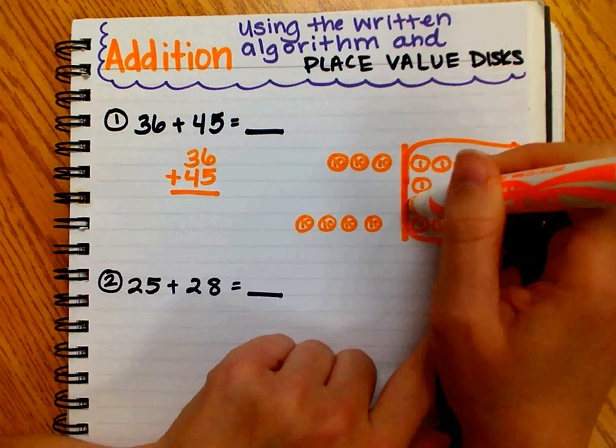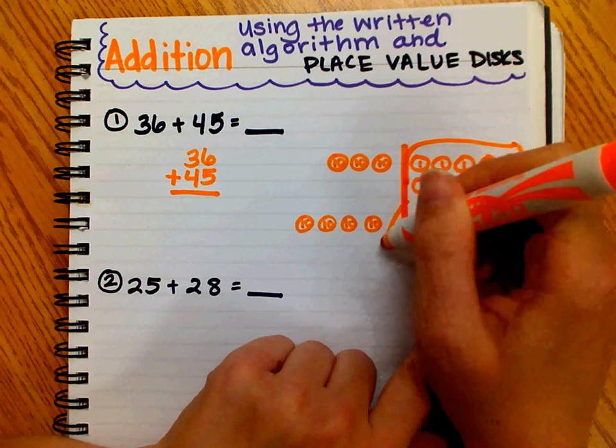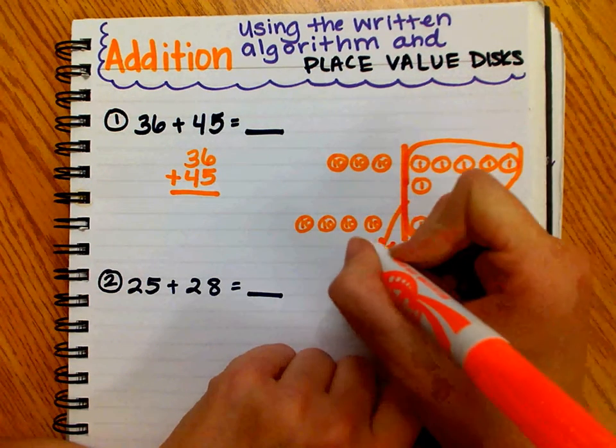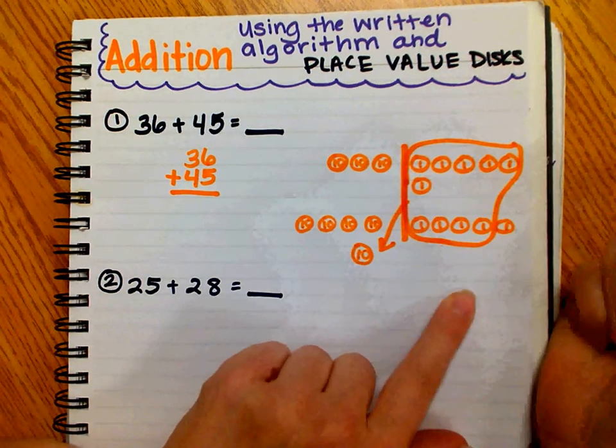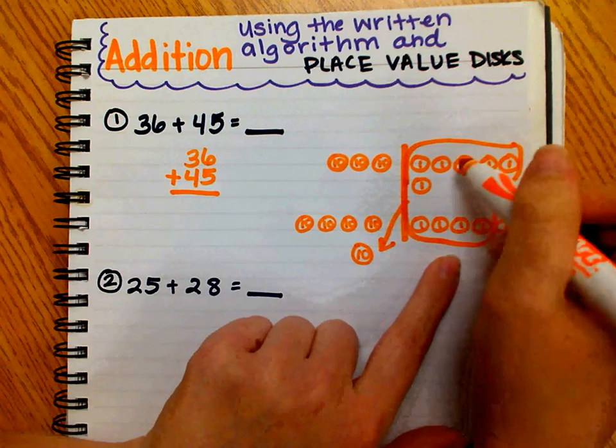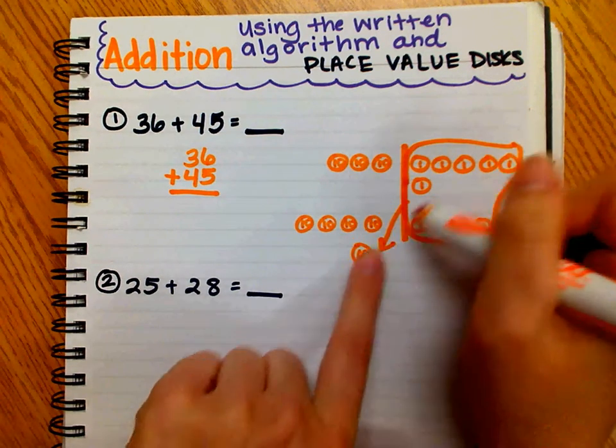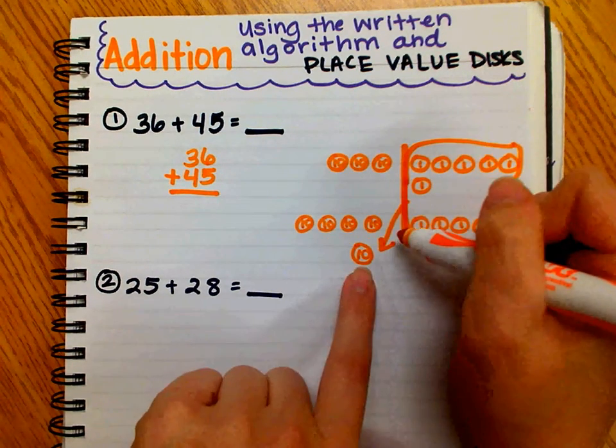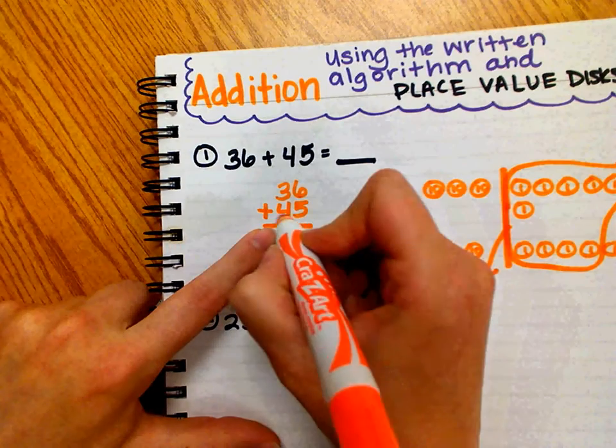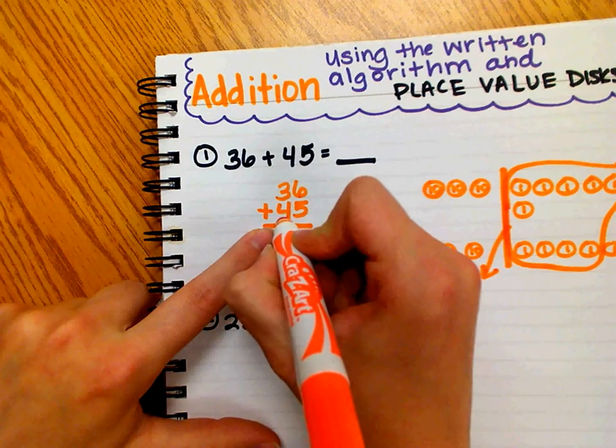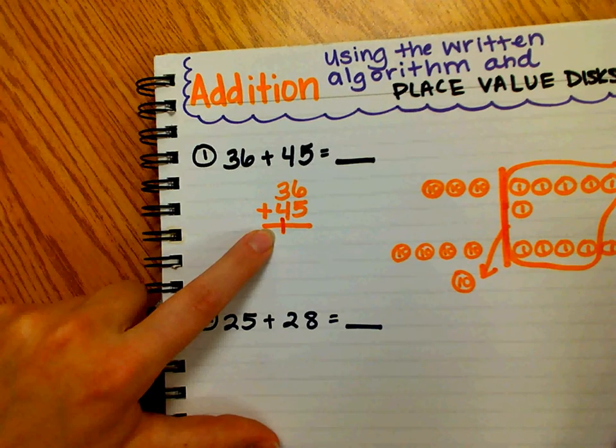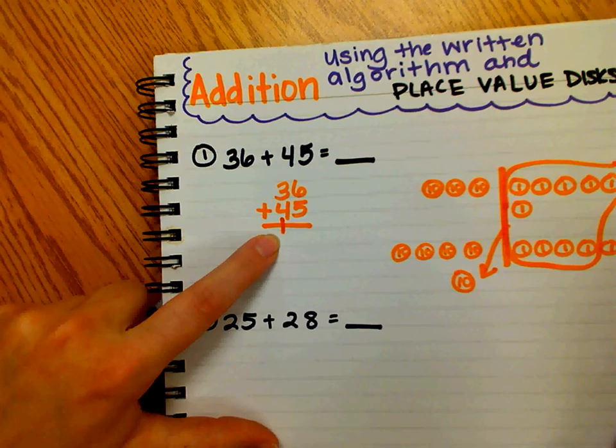So now I have six, seven, eight, nine, ten. I'm going to draw an arrow to the tens place and draw my new ten. I'm going to show my composition of a ten or my bundling of a ten by writing a one on the line below the tens place. We call this new groups below.